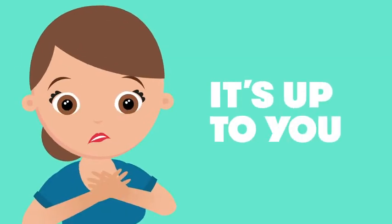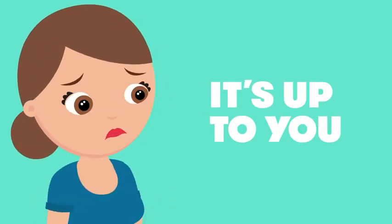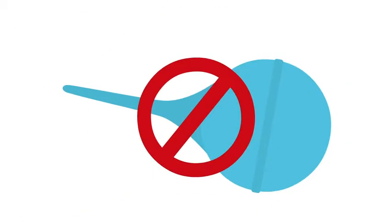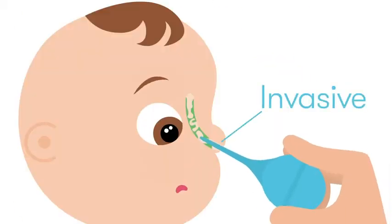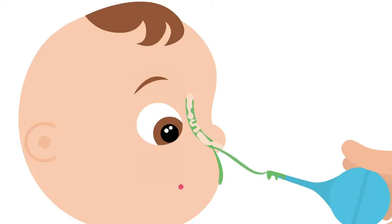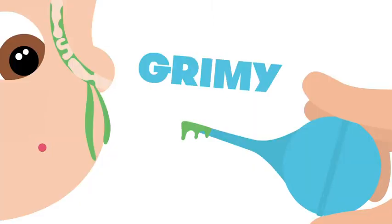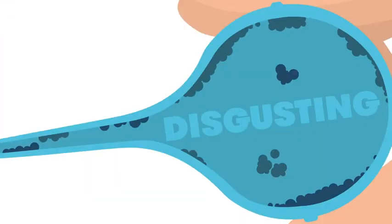It's up to you to keep their nose clean and clear, but it's snot easy with that outdated bulb syringe. They're invasive, but worse, they're nearly impossible to clean—grimy, slimy, and downright disgusting inside.